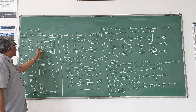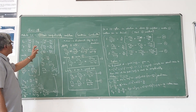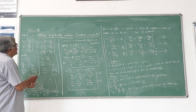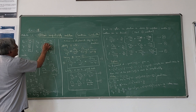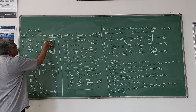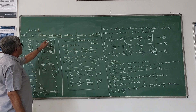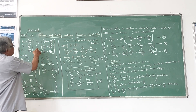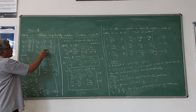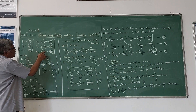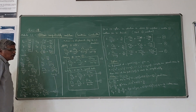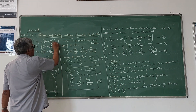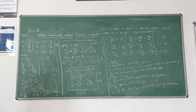The shear strain components are Gamma XY, Gamma YZ, and Gamma ZX. Gamma XY is dou V by dou X plus dou U by dou Y. Similarly, Gamma YZ is dou W by dou Y plus dou V by dou Z, and Gamma ZX is dou U by dou Z plus dou W by dou X. So totally we have six strain components in a three-dimensional strain system.